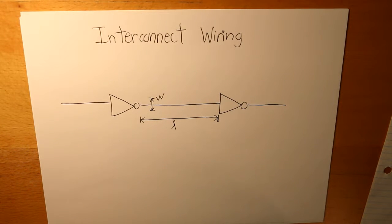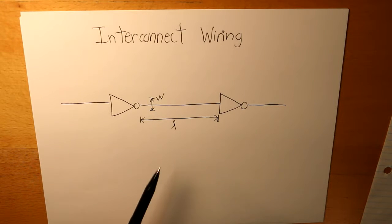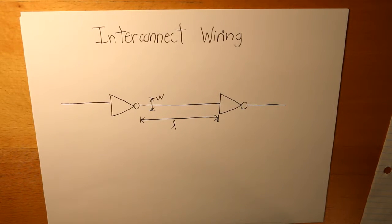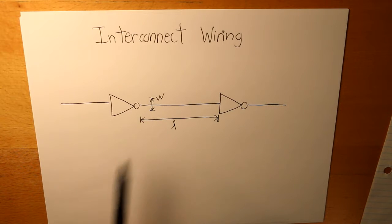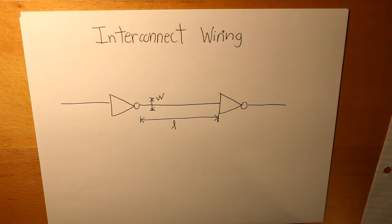Now this wire — we have to consider two requirements, which are the length and the width. With the sizing of this wire, it will also contain the resistance and the capacitance of this wire.